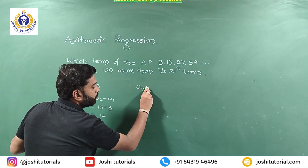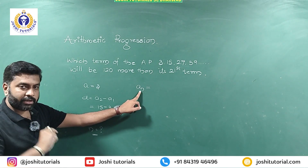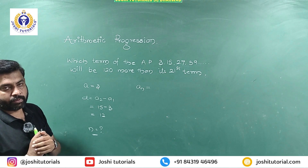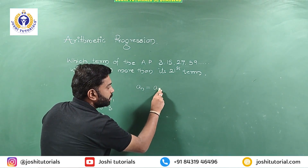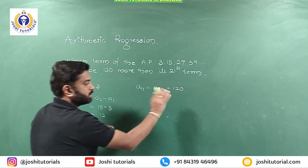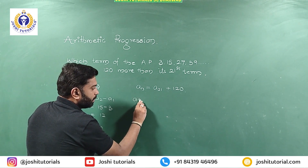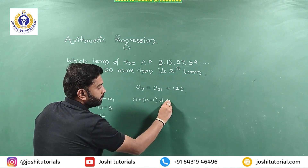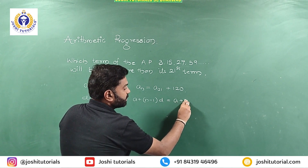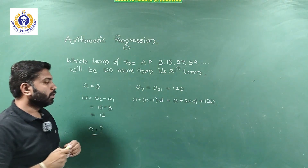To calculate the value of n, we use the formula aₙ = a + (n−1)d. The condition given is that this term is 120 more than its 21st term, so aₙ = a₂₁ + 120. Now a₂₁ = a + 20d, so the equation becomes: a + (n−1)d = a + 20d + 120.